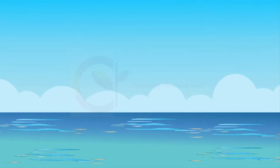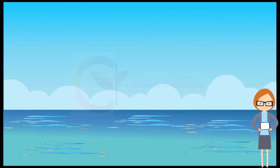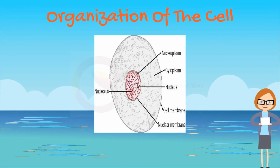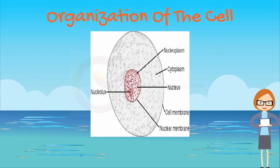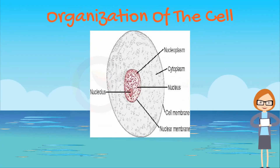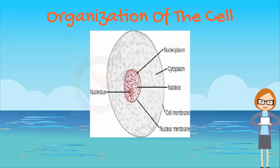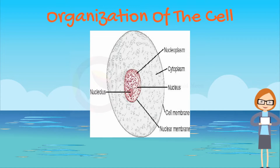A typical cell, including the nucleus and cytoplasm, are separated by the nuclear membrane. The cytoplasm is separated from the interstitial fluid which surrounds the cell by a cell membrane. The substances that make up the cell are collectively called protoplasm, which is composed mainly of the following components.